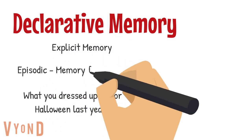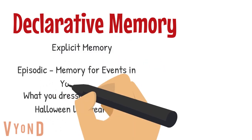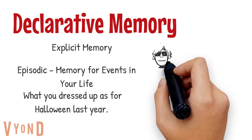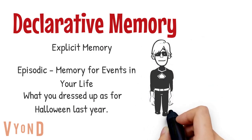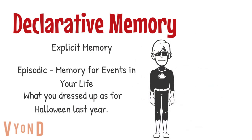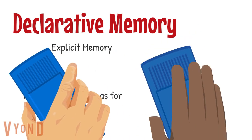Episodic memories are declarative memories for events that have happened in your life, like what you dressed up for Halloween last year, what your costume looked like, who you spent the day with — things like that.